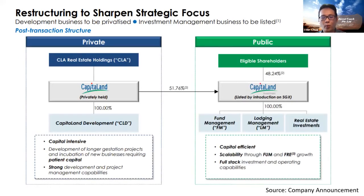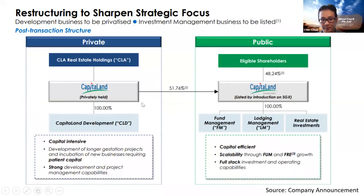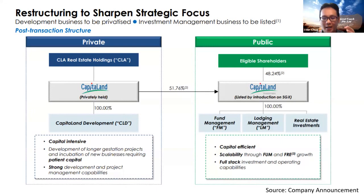So first thing first, know what is happening here. Basically, there will be a new entity that will be formed and listed — it's called CapitalN Investment, in short CLI. This is separated from CapitalN, the main company. What they have done here is segregated CapitalN Development — so this is the brick and mortar business, the buying land, the building, the developer role of CapitalN. This part will eventually be privately held, meaning it's no longer listed.